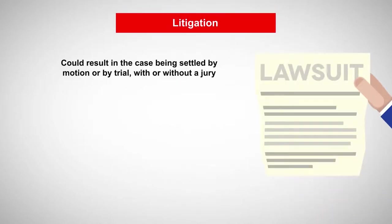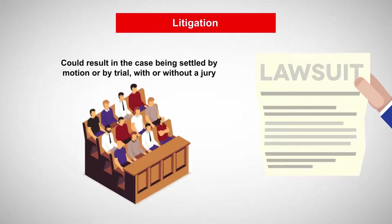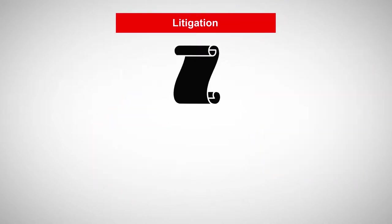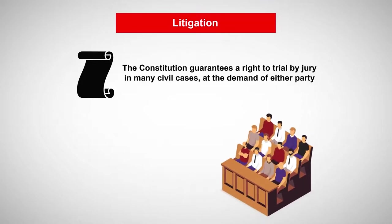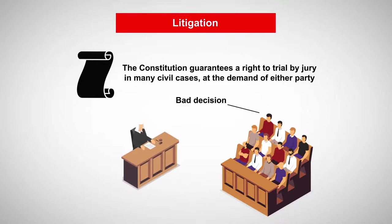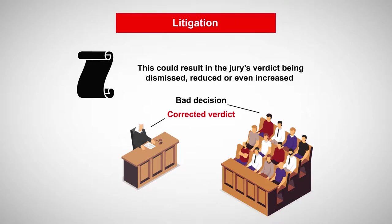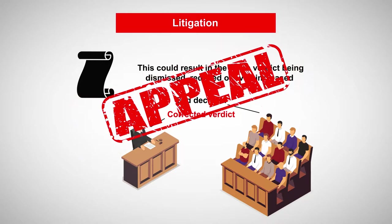Litigation is a lawsuit, which could result in the case being settled by motion or by trial, with or without a jury. The United States Constitution guarantees a right to trial by jury in many civil cases, at the demand of either party. Should a jury make a bad decision, the trial court judge has an obligation to correct the jury's verdict. This could result in the jury's verdict being dismissed, reduced, or even increased. If the trial court judge fails to correctly apply the law, an appeal can be filed.